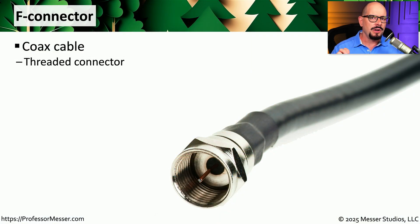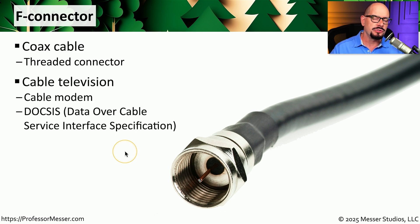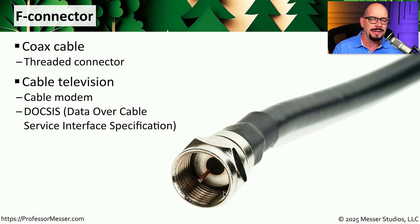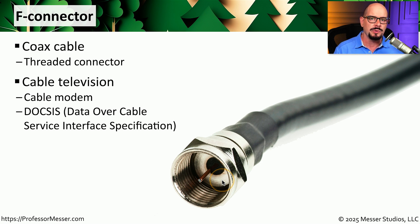One common type of coax copper connection is an F connector. The F connector is commonly used for cable television connections, and this also extends into the cable modem connection. Your coax is coming in from your cable provider or internet service provider. The F connector commonly has a threaded connection at the end so that you can screw it in, and it's not easily going to be removed without unscrewing it. In the very middle of this coax is the single copper connector used to send and receive signals over that cable connection.